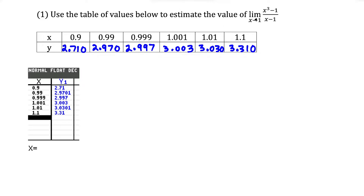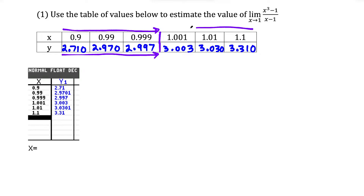Now that we've got the table filled out, the question asks for the limit as x approaches 1, and notice that 1 is between these two values in the x row. Check the left side first — as x gets closer to 1 from the left, the y values are getting closer and closer to 3. When looking for a limit, you're looking for a y value. Then check the right side: as we get closer to 1 from the right, our y values are also getting closer and closer to 3. So our estimate for the limit is equal to 3.